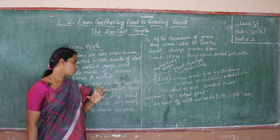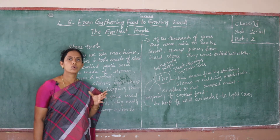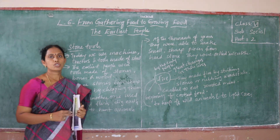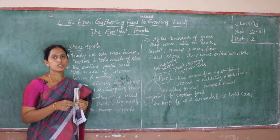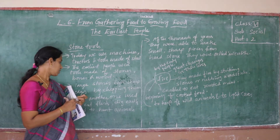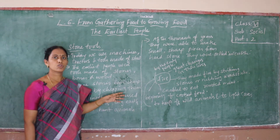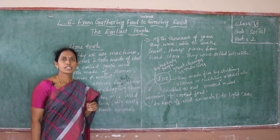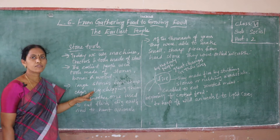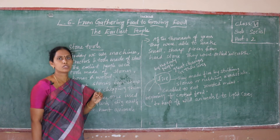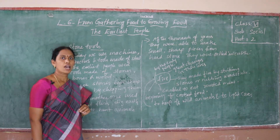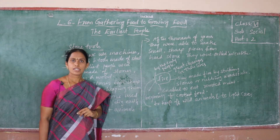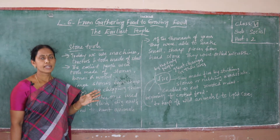The large stones have sharp edges. They collected large stones which had sharp edges, and by chipping one stone against another stone they made fire. They used stones to cut flesh, to collect tubers from soil, to dig the soil, and to hunt animals. They used these large sharp-edged stones.